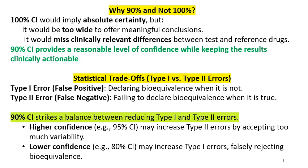Type 2 error is a false negative. Type 1 error — false positive — means declaring bioequivalence when it is not true. Type 2 error — false negative — means failing to declare bioequivalence when it actually is true. 90% CI strikes the balance between reducing type 1 and type 2 errors.